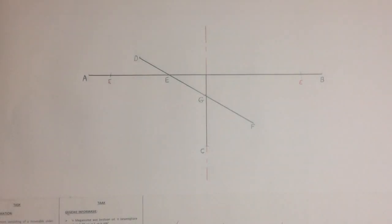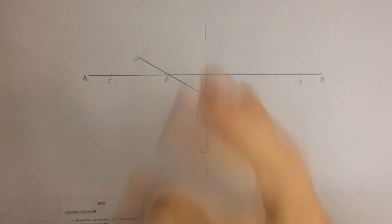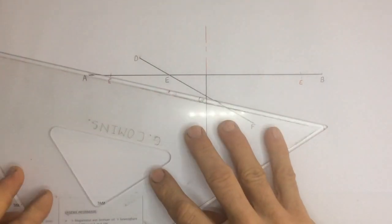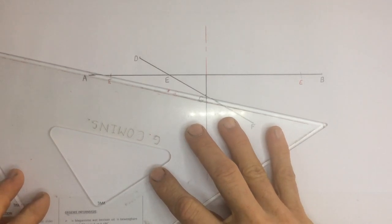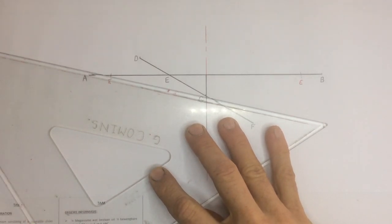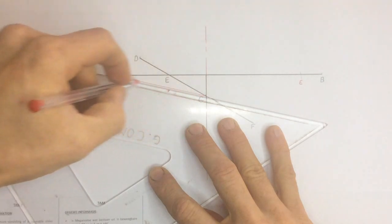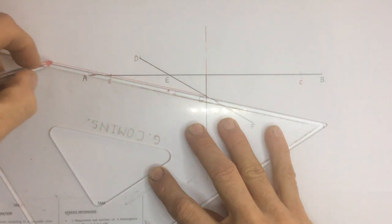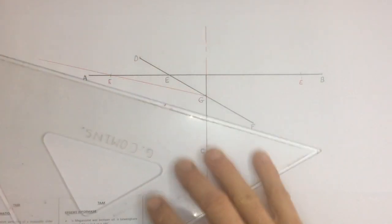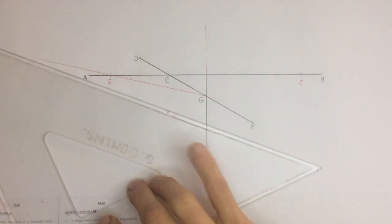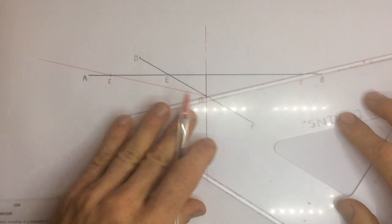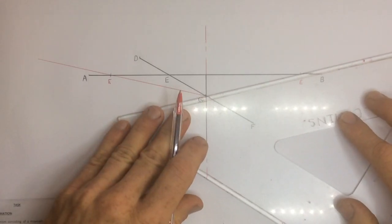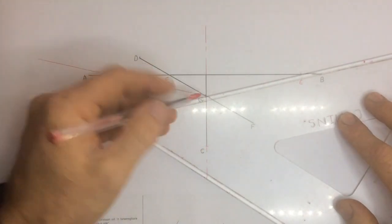After I've done that, I'm going to take my set square and draw a construction line going from G through E — I'm just going to draw that in red. And a line going from G through E on the other side as well.